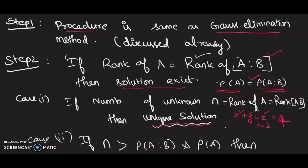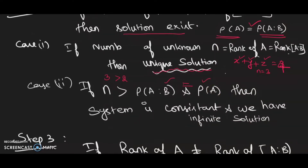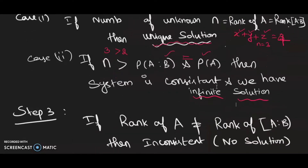If n is greater than the rank of [A|b] — and the rank of A and rank of [A|b] are still equal — for example if the rank is 2 but n is 3, the system is still consistent but we have infinite solutions, because for three unknowns we need at least three equations, so z can take different values. Finally, if the rank of A is not equal to the rank of [A|b], the system is inconsistent with no solution.